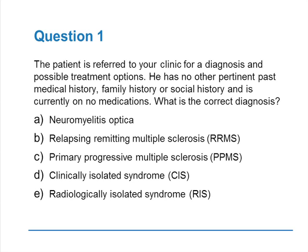So the question before you is: what is the correct diagnosis? A, neuromyelitis optica; B, relapsing-remitting multiple sclerosis; C, primary progressive multiple sclerosis; D, clinically isolated syndrome; or E, radiologically isolated syndrome.